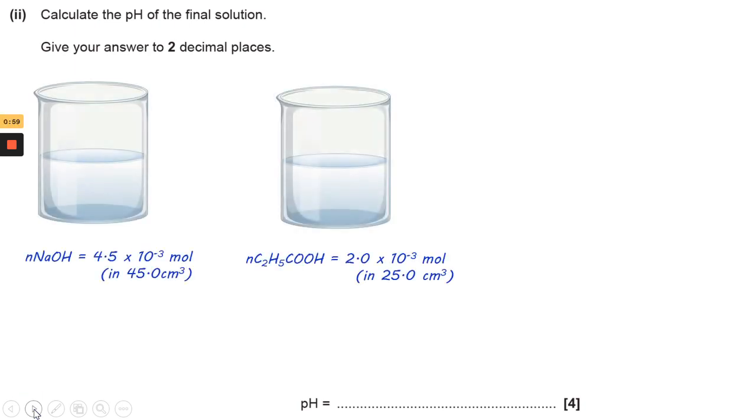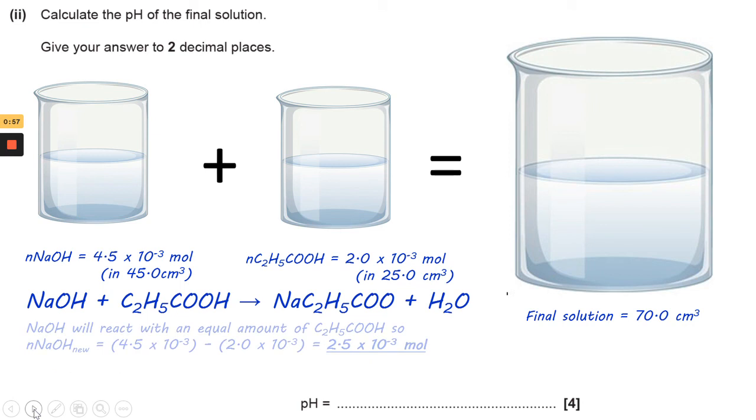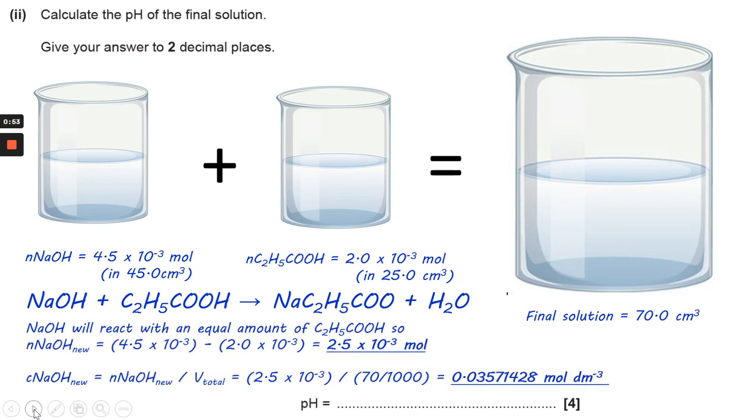So again, the two beakers. And in each one, you'll have the amount of moles that were there to start with. The final solution is 70 cm cubed. So again, sodium hydroxide will react with an equal amount of propanoic acid. So the new amount of sodium hydroxide is 4.5 times 10 to the minus 3, minus 2 times 10 to the minus 3, gives you 2.5 times 10 to the minus 3 moles.